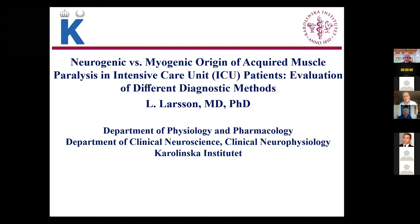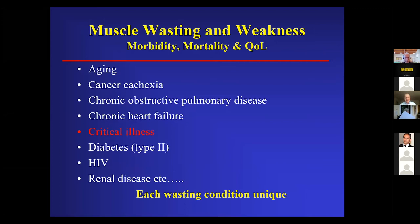Ugo invited me to write a chapter in neuromuscular disorders diagnostics, and this is what I will start talking about as well. It's about how we can differentiate acquired neurogenic versus myopathic quadriplegia in intensive care unit patients. Muscle wasting is accompanied by a number of different conditions, and critical illness is one of them.